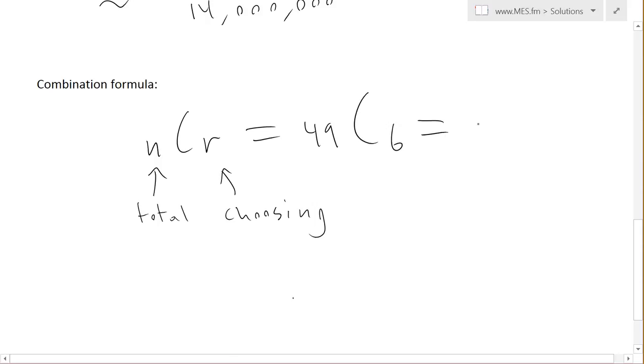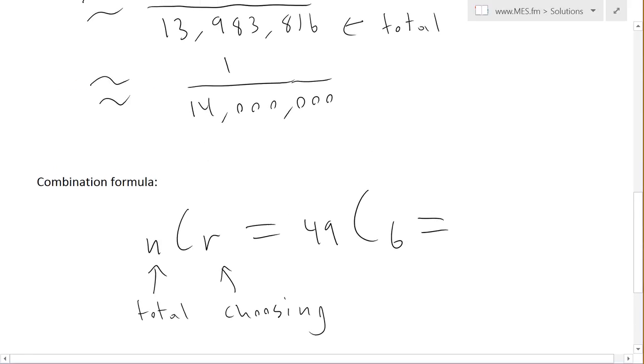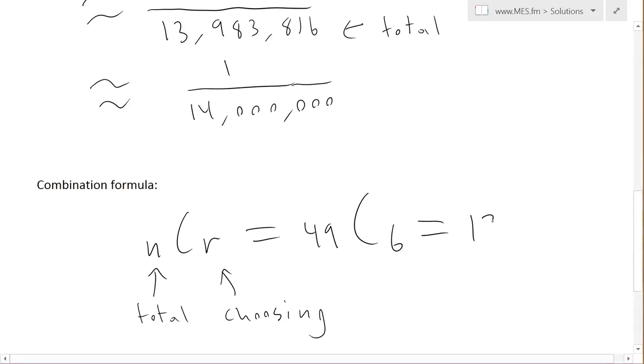Then you press the button and then press 6. That's going to give you the number that we got earlier, which was 13,983,816, which is about 14 million.